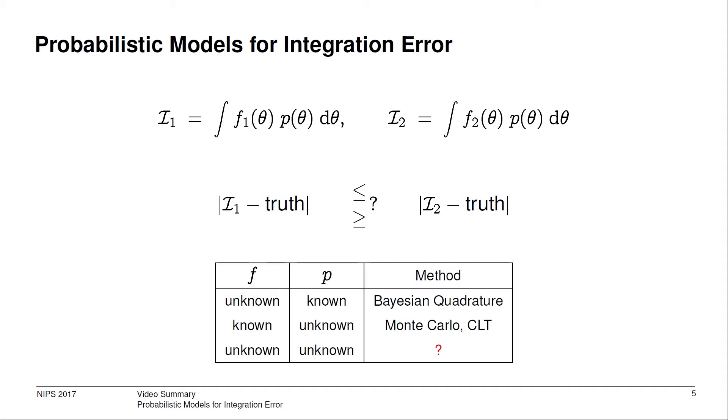Since this is impossible for complex cardiac models, we instead take a statistical approach where i1 and i2 are treated as random variables. In particular, we are in the situation where both f and p are unknown, and this requires some methodological work.